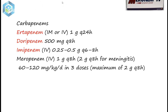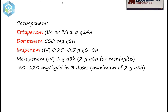Dose and administration of carbapenems: Ertapenem is given intramuscularly or intravenously at 1 gram per 24 hours, and has a longer duration of action. Doripenem is given at 500 mg per 8 hours. Imipenem is given every 6 or 8 hours. Meropenem is given at 1 gram per 8 hours.